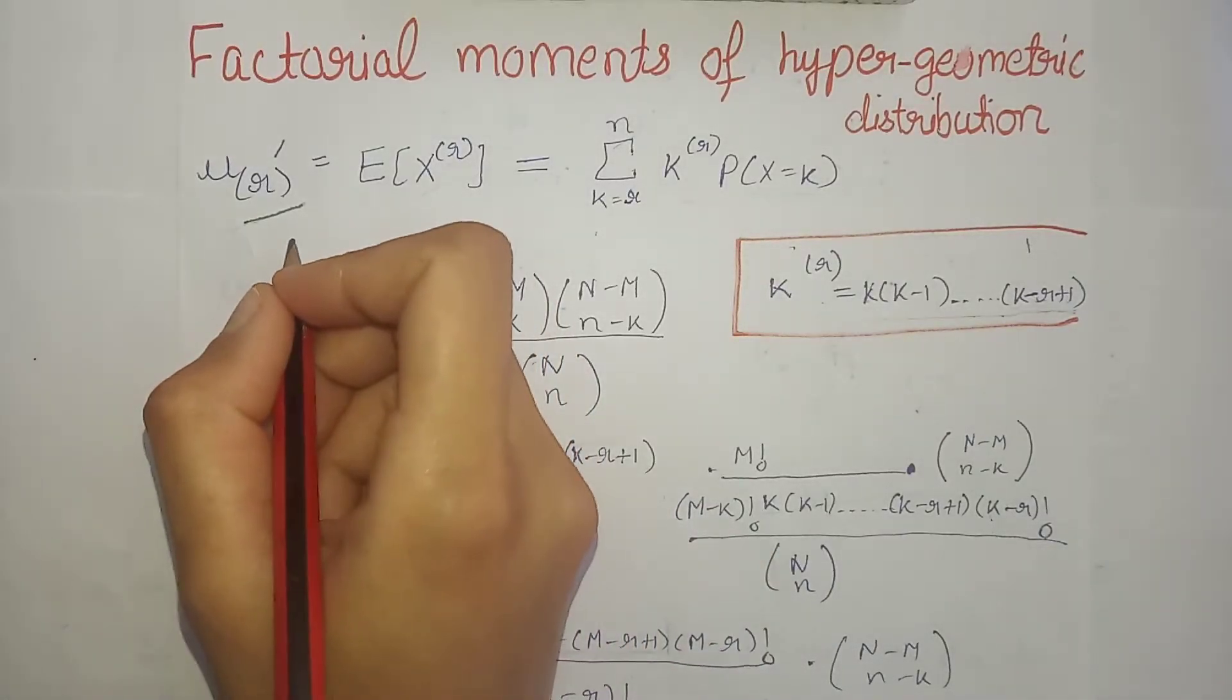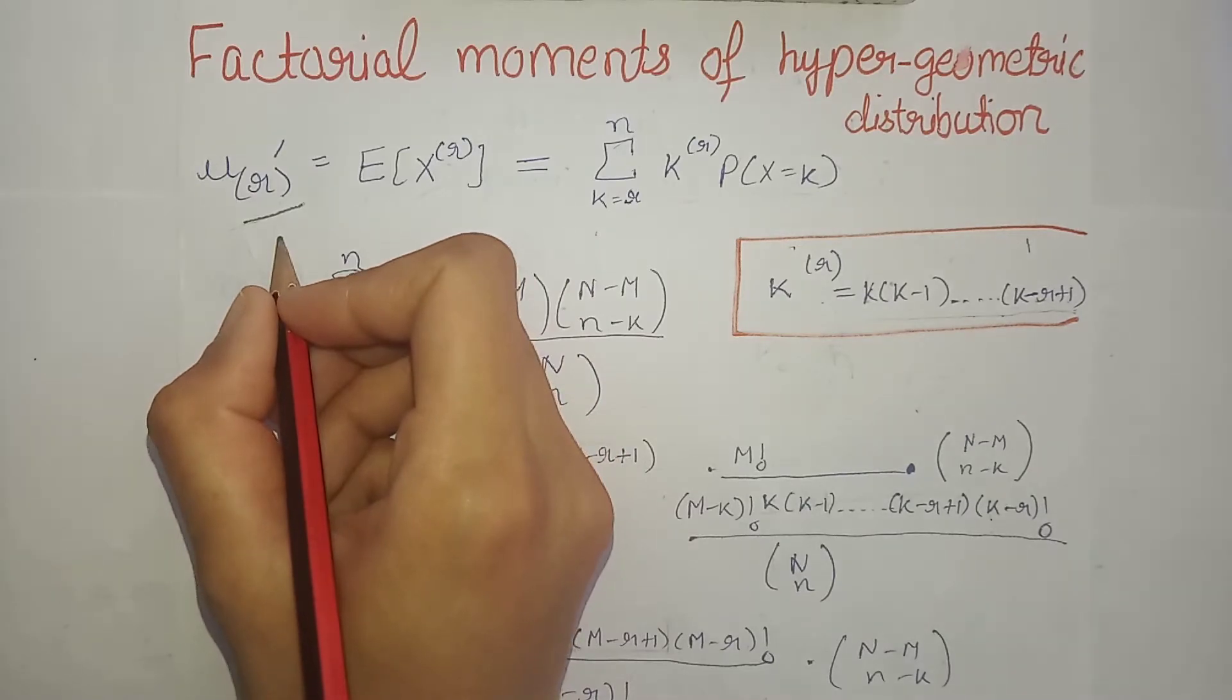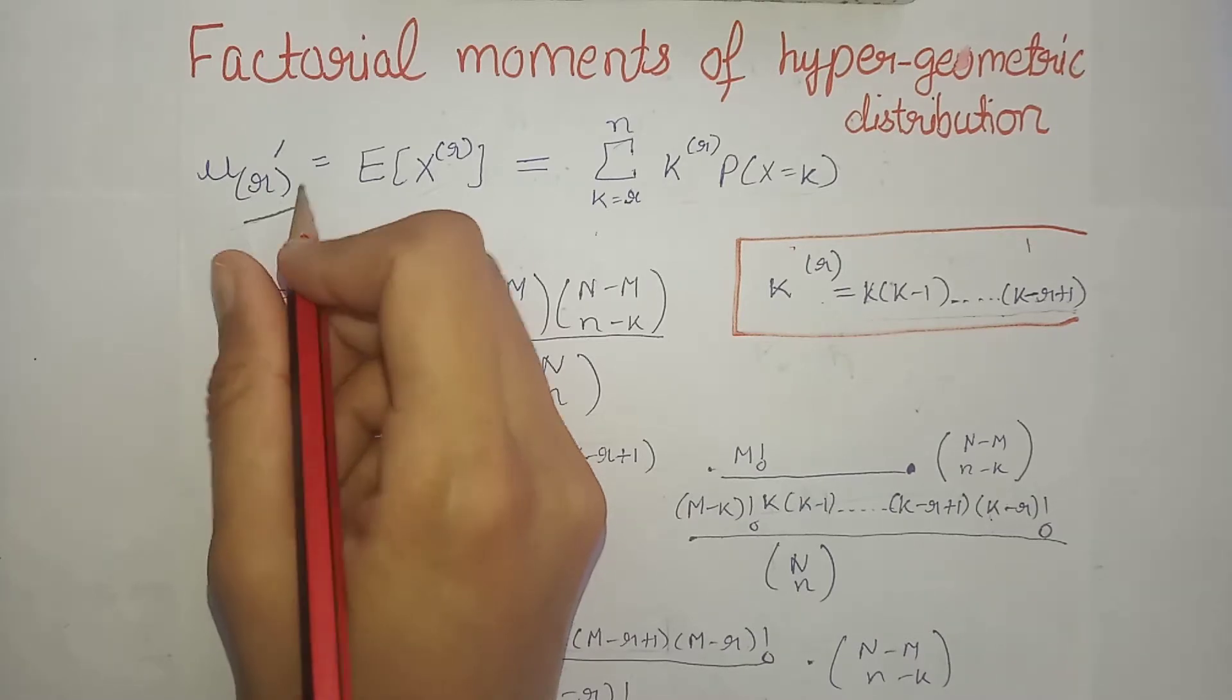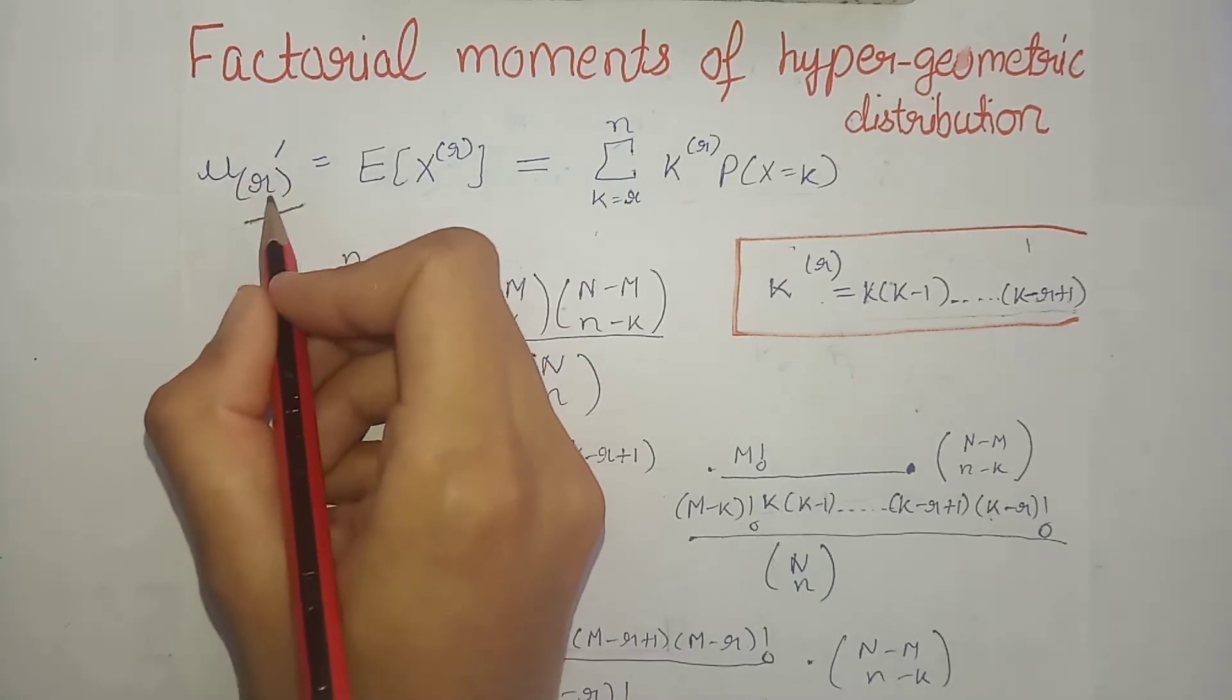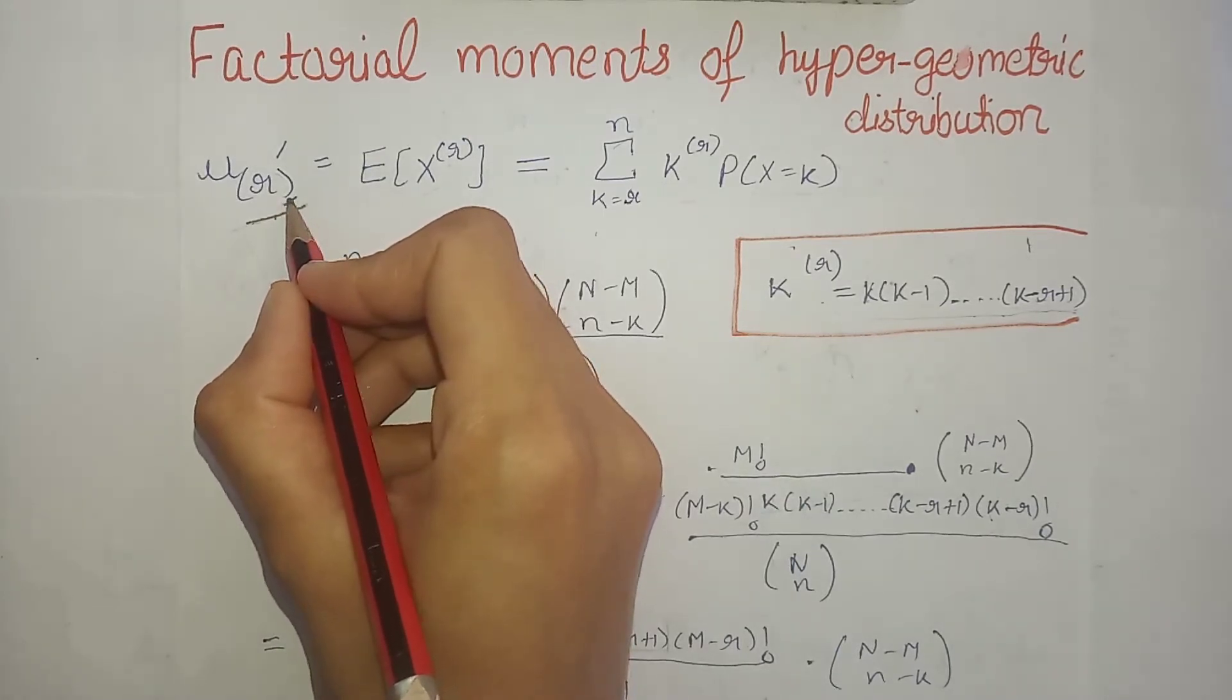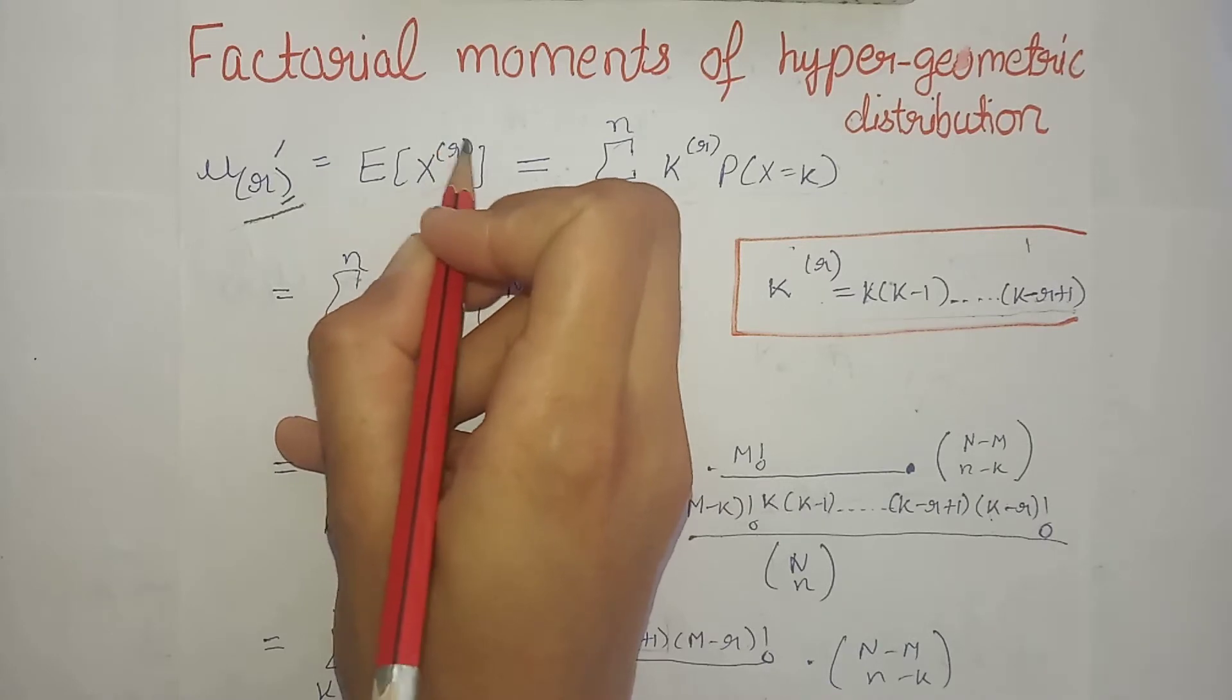Factorial moments of hypergeometric distribution. So first of all we will find out the rth factorial moment about origin, then by using that relation we will find out other factorial moments of hypergeometric distribution. The rth factorial moment about origin is denoted by mu prime subscript r with parentheses, which denotes that it is a factorial moment.